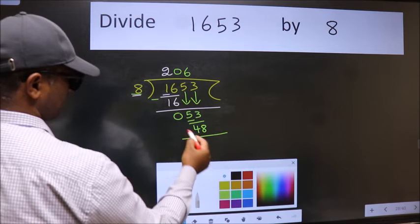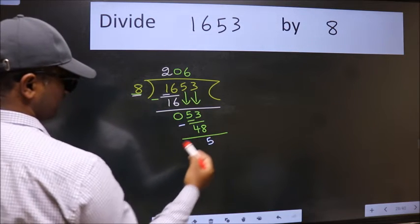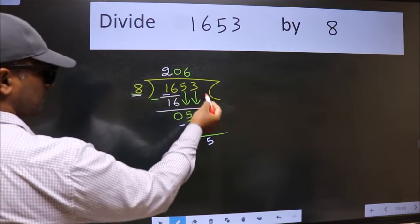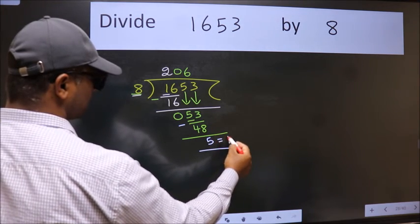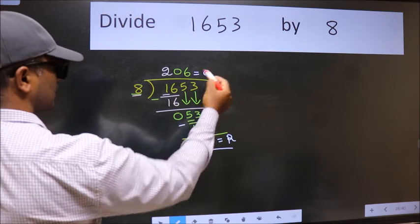Now, we subtract. We get 5. No more numbers to bring down, so we stop here. This is our remainder and this is our quotient.